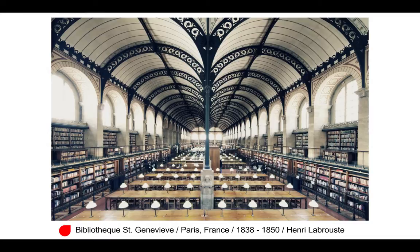So as we look at this project, Henri Labrouste completes it in 1850 and with it he creates a new typology in architecture. This is the first modern public library. The Enlightenment, or Age of Reason, has just ushered in a new era in academic and intellectual thought, and a library is absolutely a direct result of this movement.